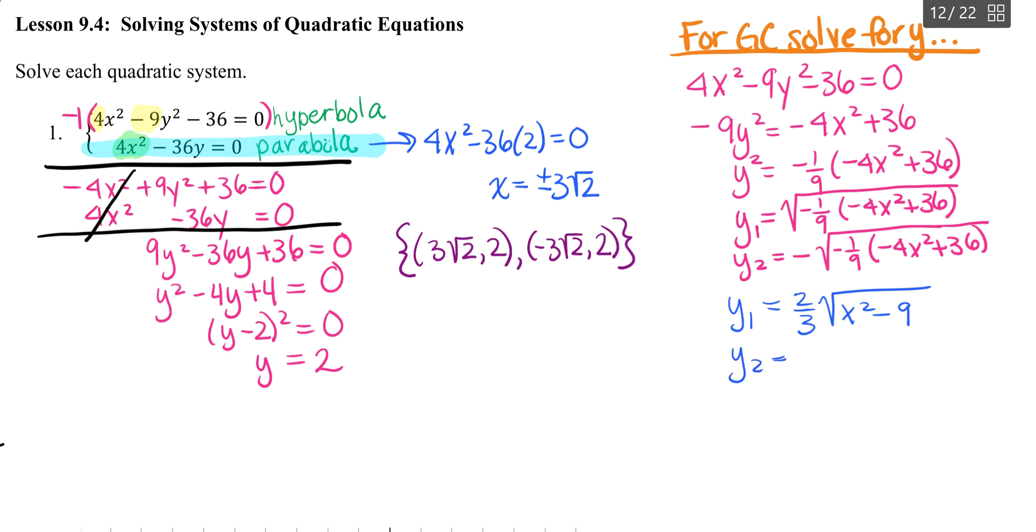Your y2 would simply be negative 2 thirds times the square root of x squared minus 9. Now these two would be in completely simplified form.